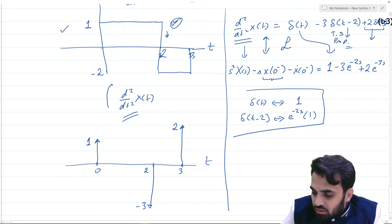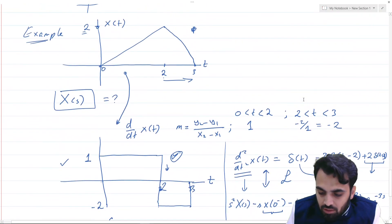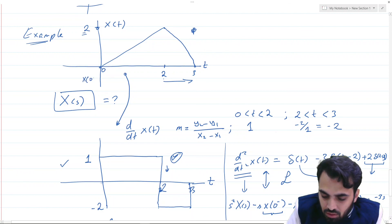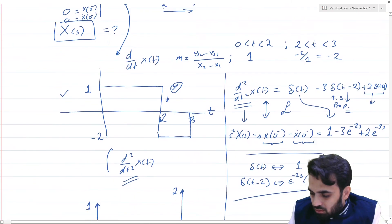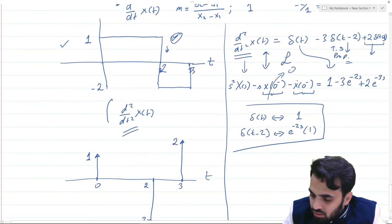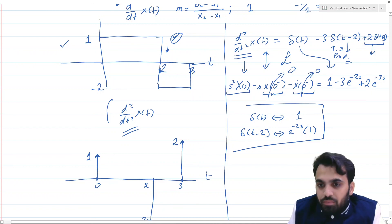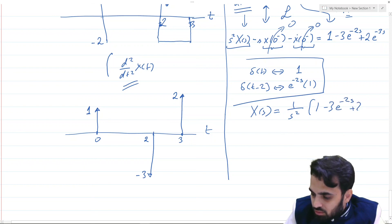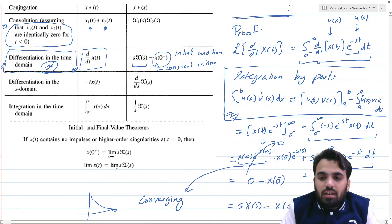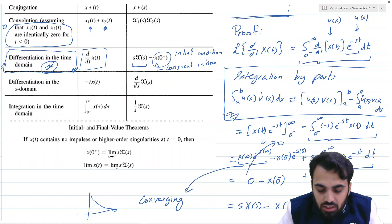The initial conditions are: x(0⁻) = 0 (the signal starts at zero) and x'(0⁻) = 0 (no change at that point). So both initial condition terms vanish, giving s²·X(s) = 1 − 3e^(−2s) + 2e^(−3s), and therefore X(s) = (1/s²)·(1 − 3e^(−2s) + 2e^(−3s)). In the next video we will again use differentiation in the time domain to analyze a second-order RLC circuit.